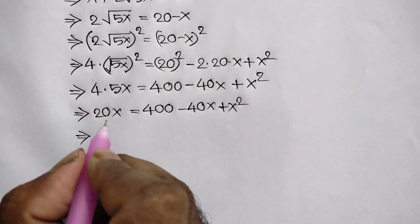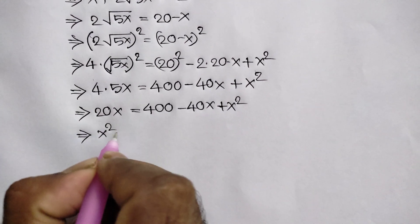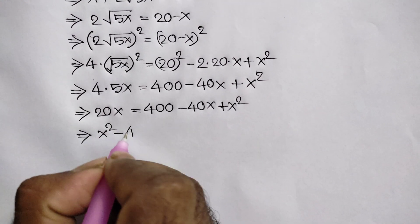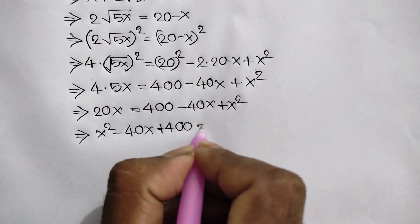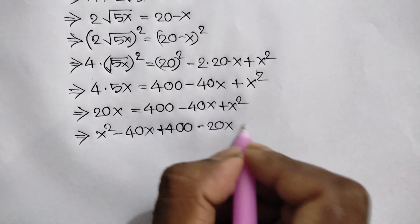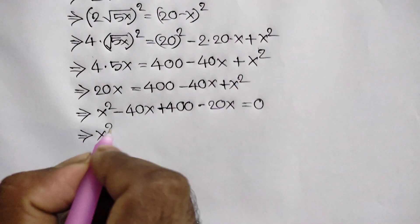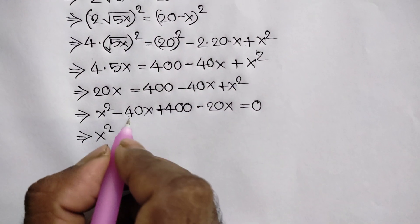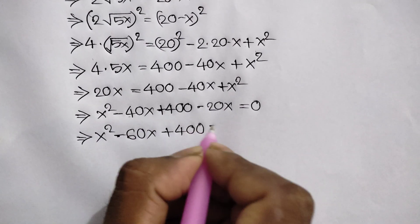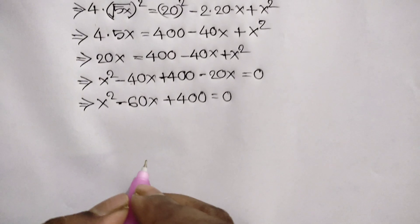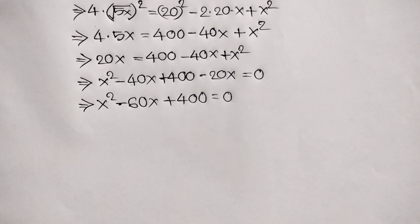Taking 20x to the right side, we will get x squared minus 40x plus 400 minus 20x is equal to 0, or x squared minus 60x plus 400 is equal to 0. Now from here we can use the quadratic formula.